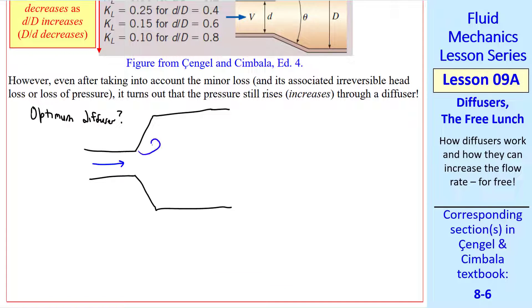What's the optimum diffuser? If the angle's too sharp, you'll get flow separation and lots of irreversibilities, and KL will be high.